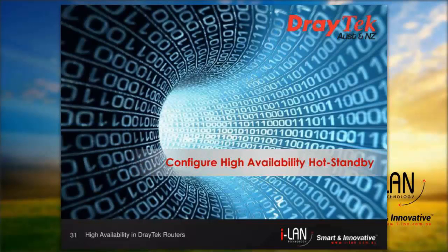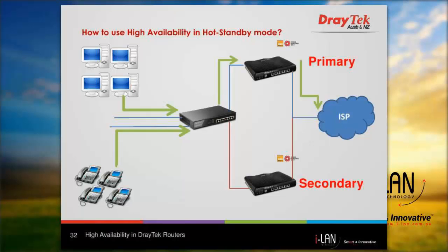We will now go through the key steps to configure high availability hot standby mode using DrayOS. High availability provides hardware redundancy to LAN clients. In hot standby mode, the primary and secondary routers share the same WAN source — usually only the primary router is online — and when the primary goes down, the secondary will come up, use the same WAN connection, and continue to provide internet service to LAN clients.